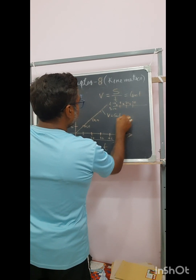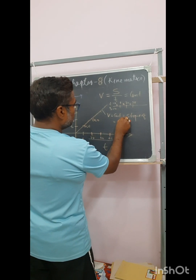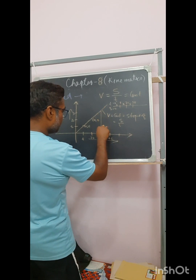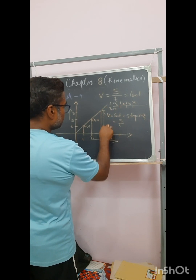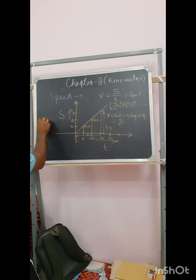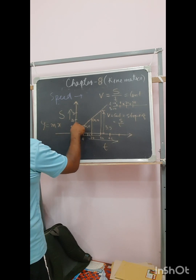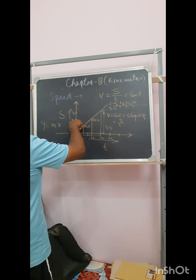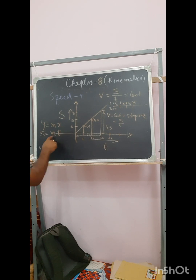V is the slope of the line, denoted by s by t. If I take a portion and drop a vertical, this part is 3s and this part is 3t. Correlating with the linear equation y = mx (where c = 0, since the line passes through the origin), s corresponds to y and t to x. So m is the slope, which equals tan θ — the angle the line makes with the horizontal axis.